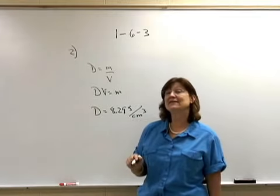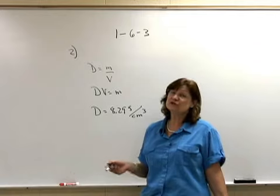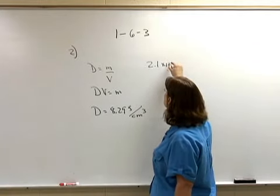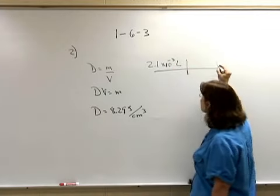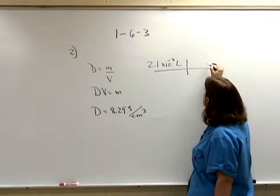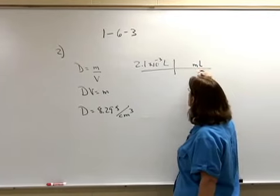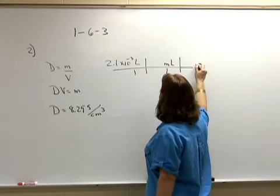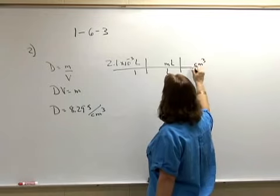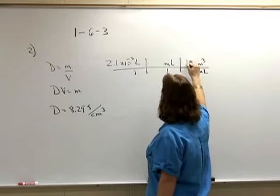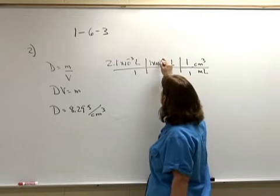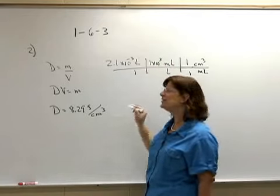I notice that my density is 8.29 grams per centimeter cubed and my volume is given in liters, so I have to make a conversion to be consistent. I have 2.1 times 10 to the minus 3 liters. I want to get to milliliters first and cancel my liters because I know that 1 centimeter cubed is 1 milliliter. There are 1,000 milliliters in 1 liter.